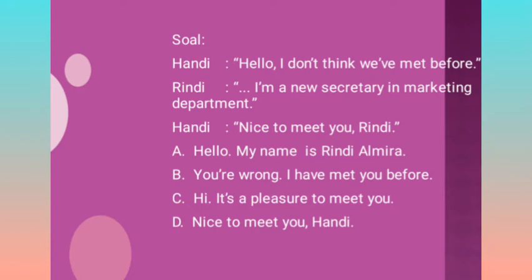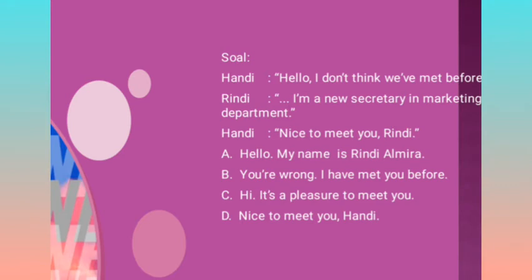C: 'Hi, it's a pleasure to meet you' — sekilas tampaknya benar karena ini introduction, tapi umumnya orang ketika diajak berkenalan, yang pertama disebutkan mesti adalah nama. 'It's a pleasure to meet you' itu sebuah pilihan, boleh ada boleh tidak, maka C tidak tepat. Kalau D: 'Nice to meet you, Handi' — si Rindi kan belum kenal si Handi, belum tahu namanya, jadi itu lucu. Maka jawabannya adalah A: Hello, my name is Rindi Almira.